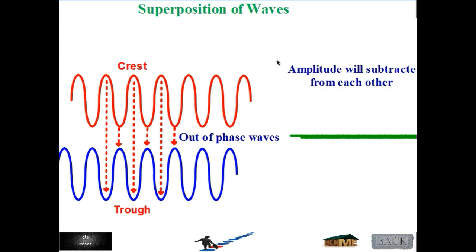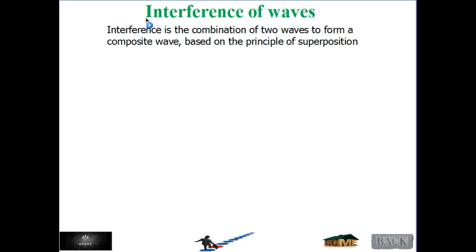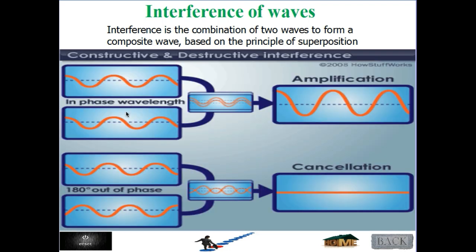We subtract the amplitude and we call this destructive superposition. The interference of waves is the combination of two waves to form a composite wave based on the principle of superposition. Sometimes these waves will interfere in-phase, then we add the amplitude and get constructive superposition. While if they interfere out of phase or anti-phase, the amplitude will be cancelled — we call it destructive superposition.